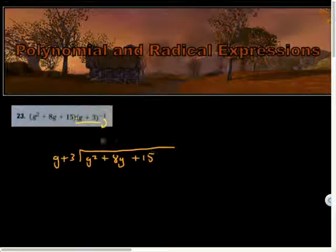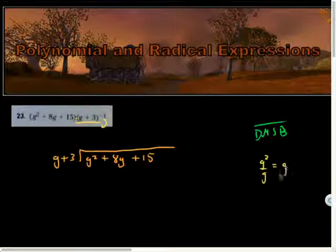Let's do this. Divide, multiply, subtract, bring down. DMSB repeat. Here we go, let's do some division. Leading term by leading term: g squared divided by g is g. I'll throw that in the g's column. Multiply g times g is g squared, g times 3 is 3g.